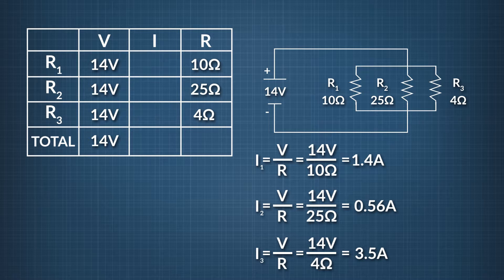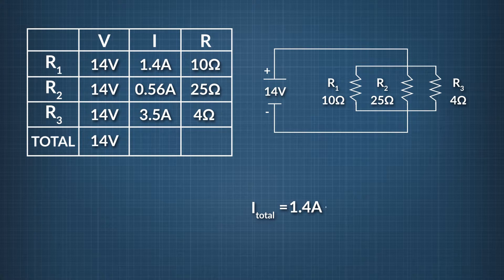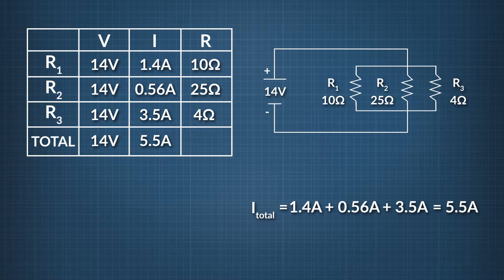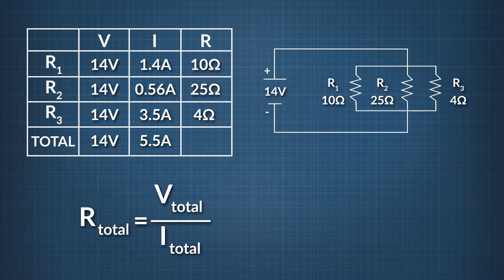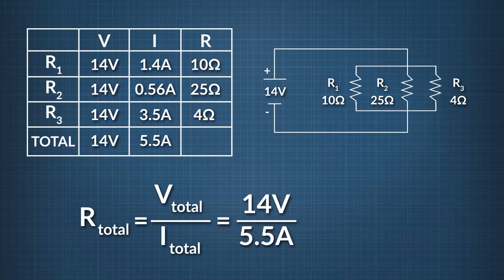Let's fill in these current values in our table. In parallel circuits, if we know the current through each branch, we can add them to find the total circuit current. I total equals 1.4 plus 0.56 plus 3.5 amps, which equals 5.5 amps. The last step is to use Ohm's Law to solve for overall circuit resistance: 14 volts divided by 5.5 amps equals 2.5 ohms. With that, we have a completed VIR chart for this parallel circuit.